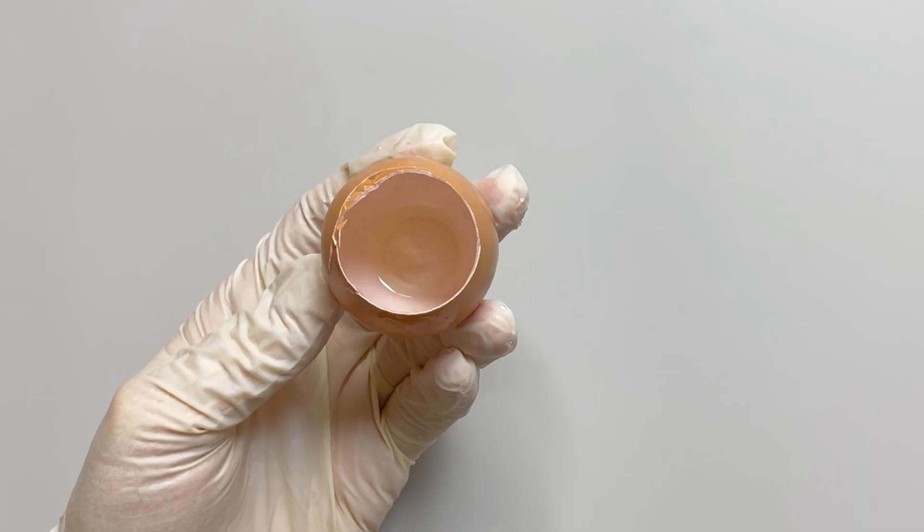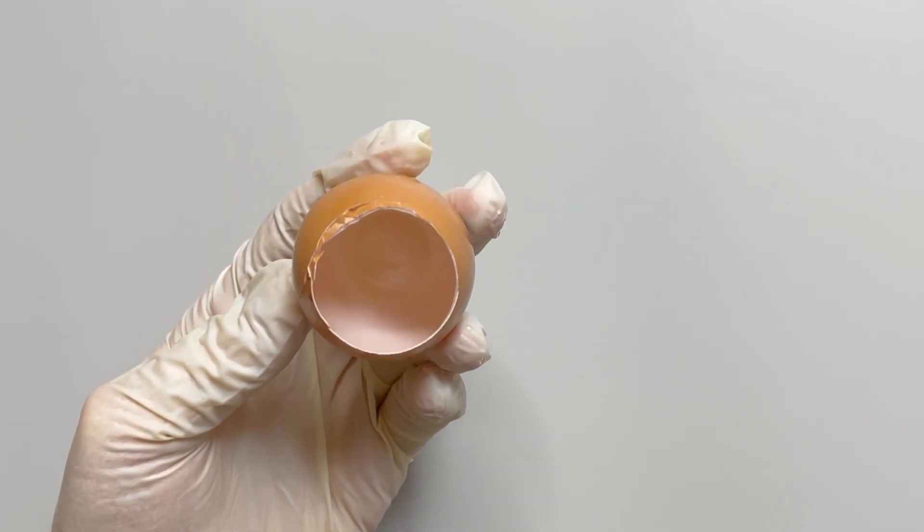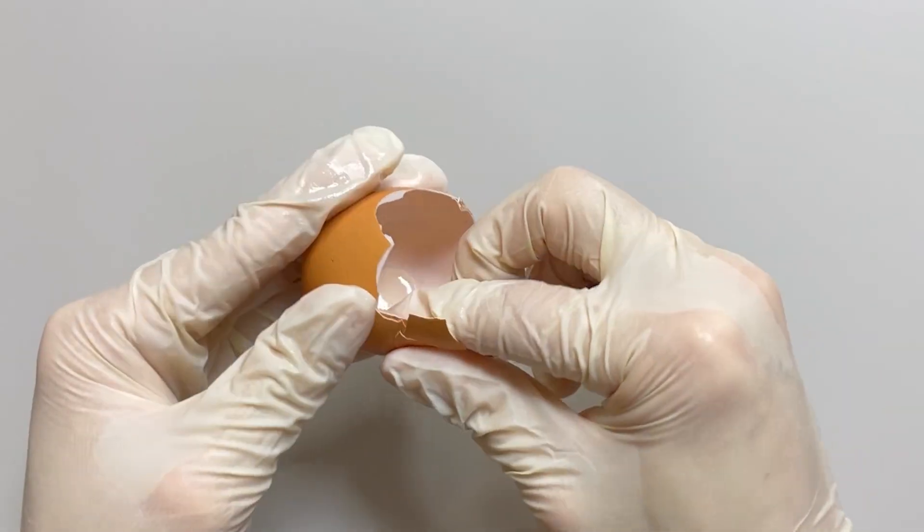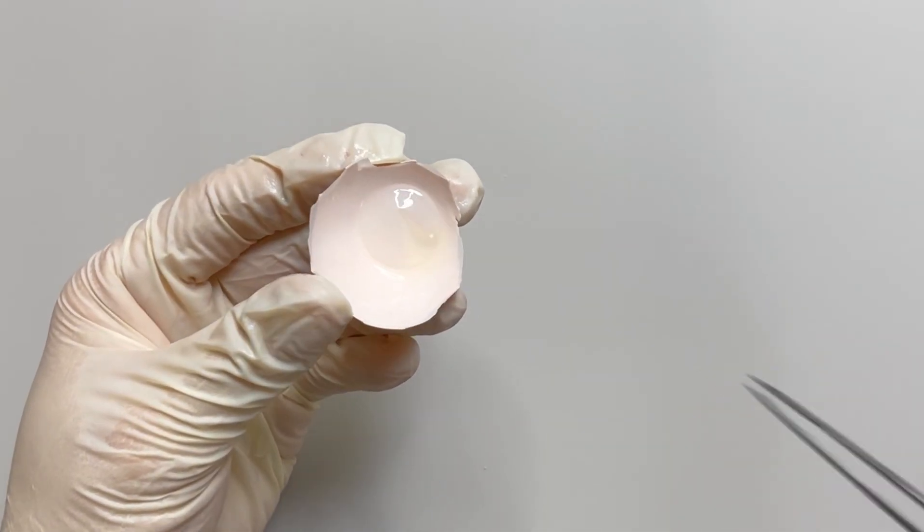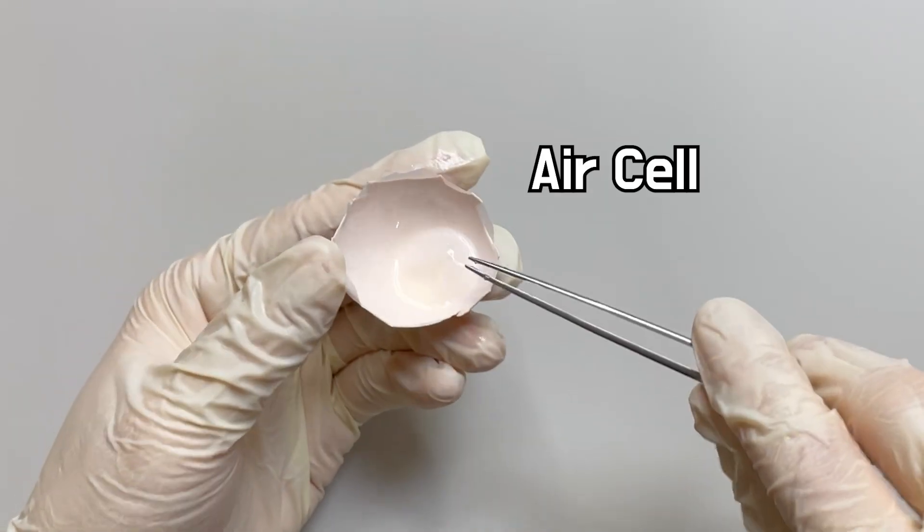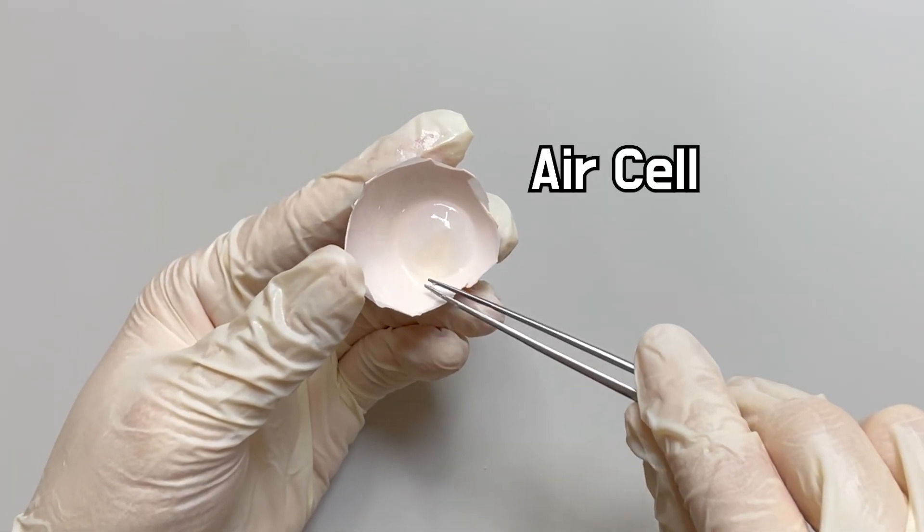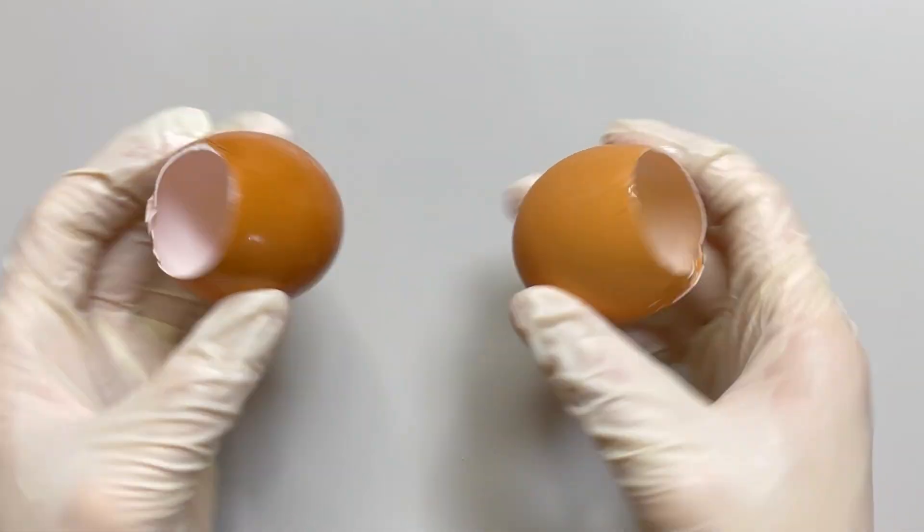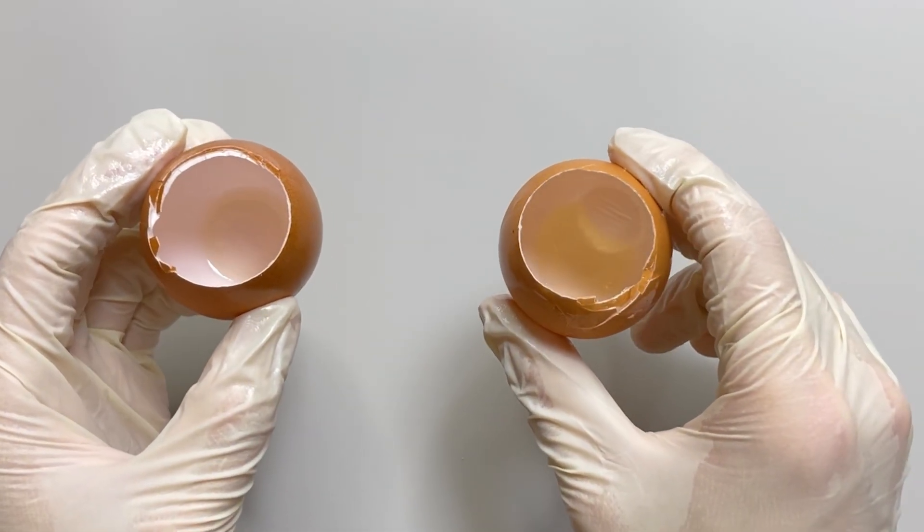Open the shell and pour out the contents inside. When we observe the inside of the shell, there is something at the bottom. Once we remove the shell, we can see the membrane inflated like this. This is an empty space called the air cell, which forms when the warm egg from the hen cools down, causing separation between the two layers of eggshell membranes.